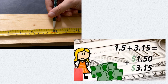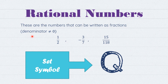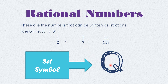For example, 1.5 dollars means it's more than one dollar but less than two dollars, so we use decimals a lot in real life. After that we have the rational numbers. These are numbers that can be written as fractions. The denominator should be different from zero. For example, one over two, or minus three over seven. The symbol for this set is Q, which refers to quotient.